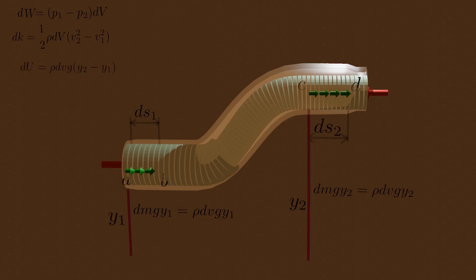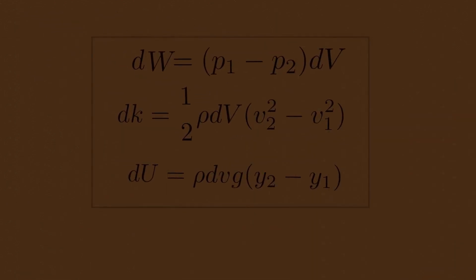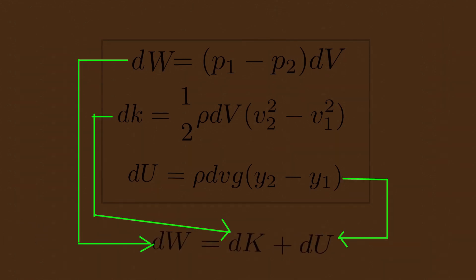Now we get all the energy equations by combining these three equations. Bernoulli's equation will arrive. The work DW is due to forces other than the conservative force of gravity, so it equals the change in the total mechanical energy associated with the fluid element.